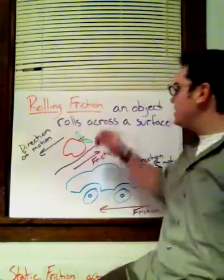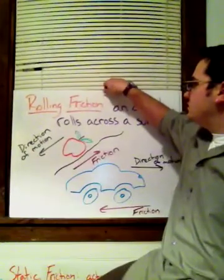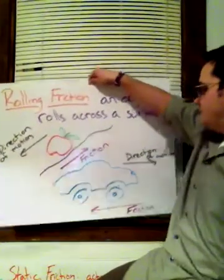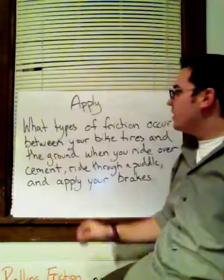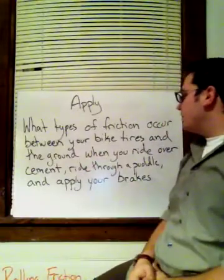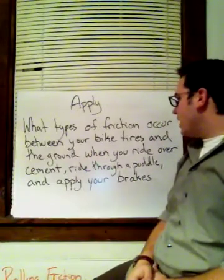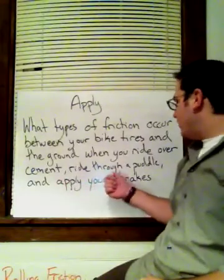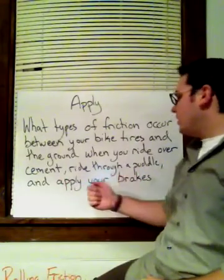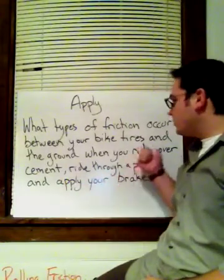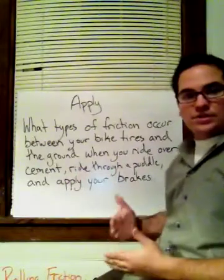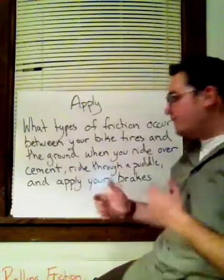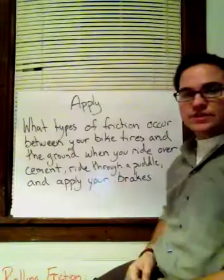So those are the four types of friction. Now it's your turn to apply: what types of friction occur between your bike tires and the ground when you ride over cement, ride through a puddle, and apply your brakes? Figure out which type of friction affects each of these three scenarios.